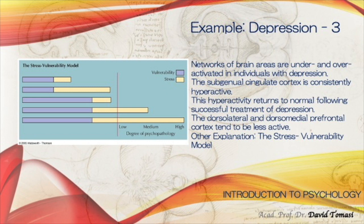The stress-vulnerability model holds that the degree of psychopathology — low, medium, or high — relates to the stress a person encounters in combination with their vulnerability. Networks of brain areas can be either under-activated or over-activated in individuals with depression, involving a fight-or-flight response similar to the HPA axis. The subgenual cingulate cortex is consistently hyperactive and returns to normal with successful treatment of depression, while the dorsolateral and dorsomedial prefrontal cortex tend to be less active.